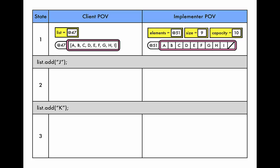We start out with a list of nine elements. There is the client view on the left. There's some variable list that points to a list object on the heap. To the client it's just a list, a sequence of elements.